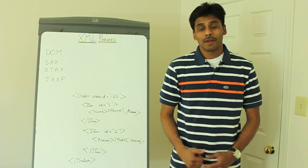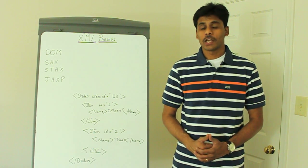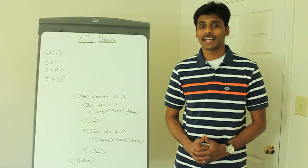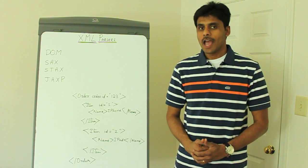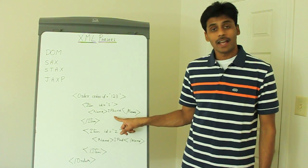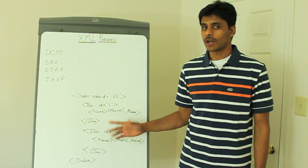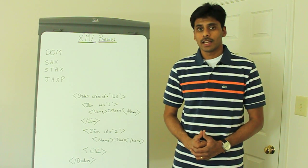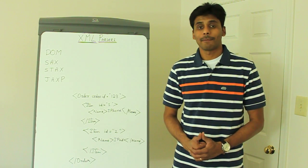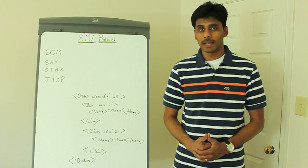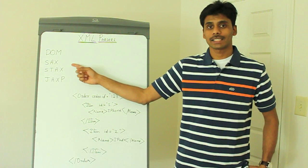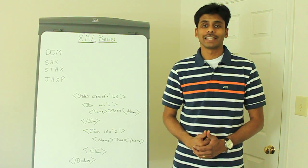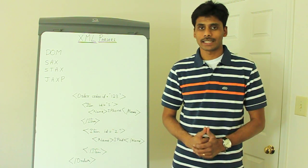Hi. From the XML introduction presentation, you have learnt how powerful XML can be because of its data independency — that is, it has both the data as well as the metadata which talks about the data. Today, you will learn what an XML parser is and the three different types of XML parsing standards that are available, namely DOM, SAX, and StAX. You will also learn a few advantages and disadvantages of these three types.